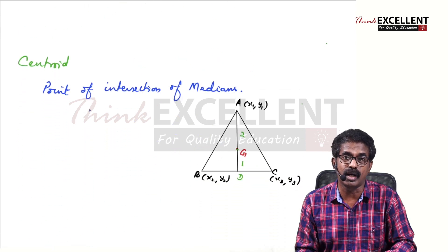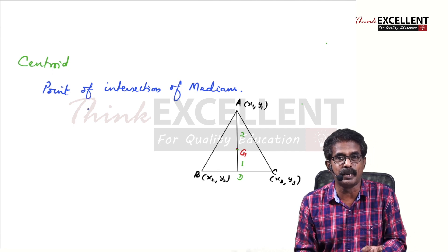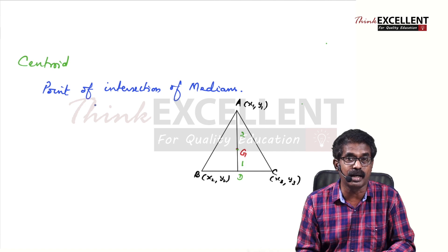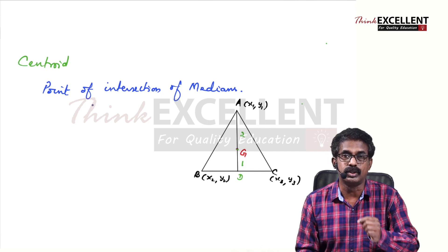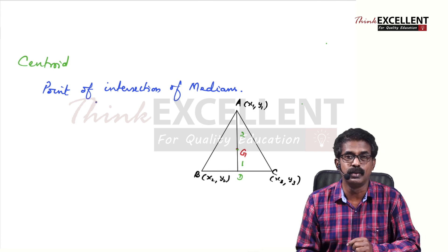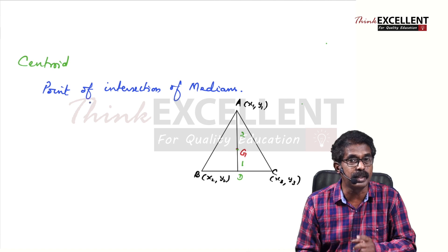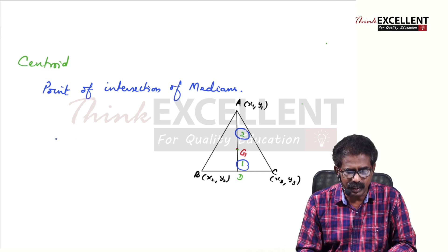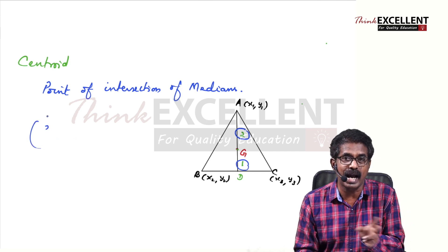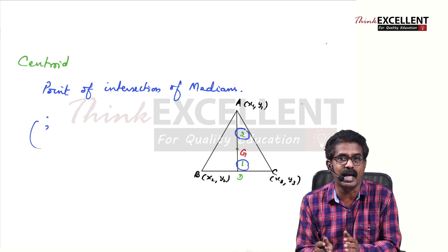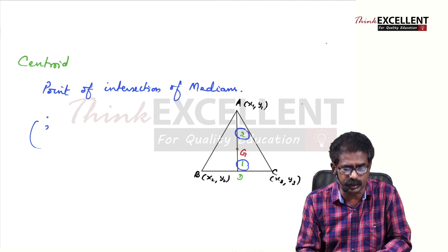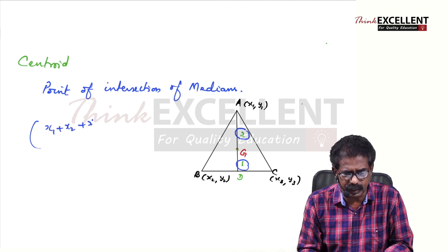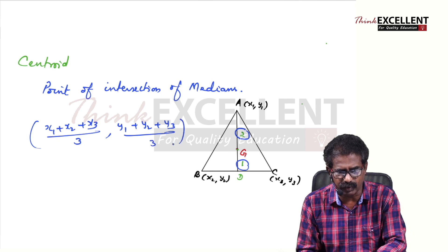Next, centroid. What is centroid? You would have studied in geometry — it is the point of intersection of medians. A median joins one vertex to the midpoint of the opposite side. For a triangle you can draw three medians; they meet at one point called the centroid. Centroid divides the median in the ratio 2 is to 1. For centroid, if the three vertices are X1 Y1, X2 Y2, X3 Y3, the formula is X1 plus X2 plus X3 by 3, and Y1 plus Y2 plus Y3 by 3.